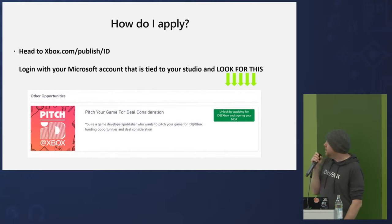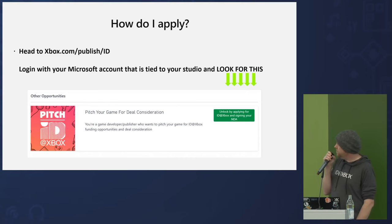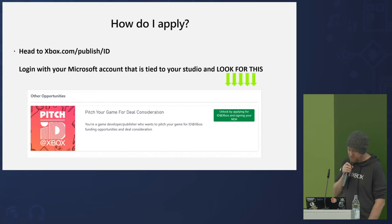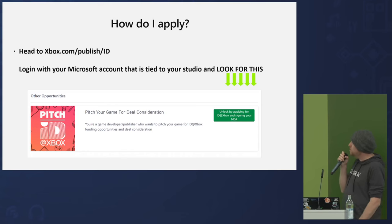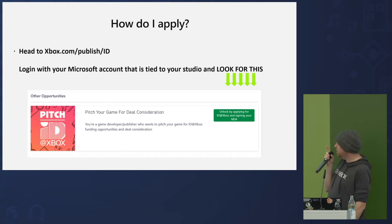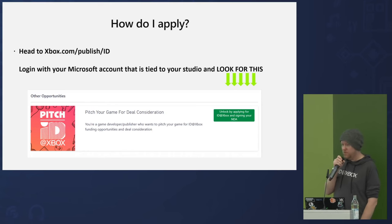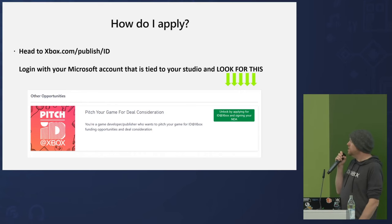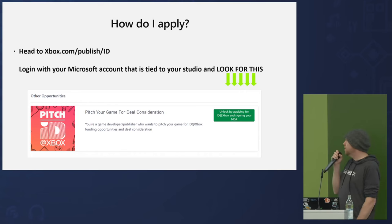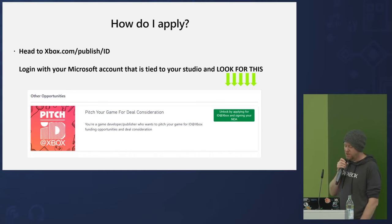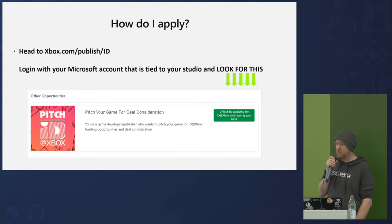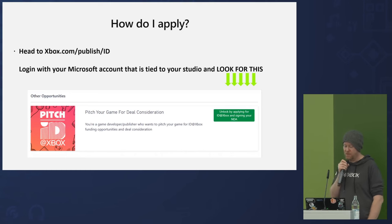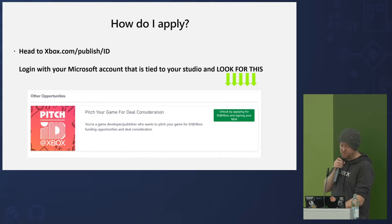How do you apply? Similar to submitting a game information form, there's a button on the website once you're signed up and under NDA — you can click to pitch your game. If you're interested in the Developer Acceleration Program or want to be part of Game Pass, this is where to start. There's a simple form to fill in, it gets sent to us, and there's a whole team on the back end who will go through it and decide whether your game can be included.